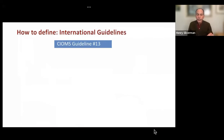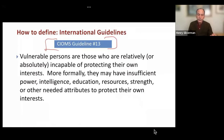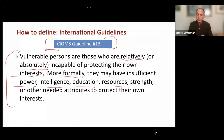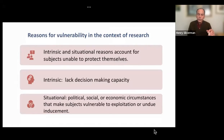The CIOMS guidelines, an international guideline, states that vulnerable persons are those who are relatively or absolutely incapable of protecting their own interests. More formally, they may have insufficient power, intelligence, education, resources, strength, or other needed attributes to protect their own interests. In the context of research, there may be intrinsic and situational reasons to account for subjects being unable to protect themselves.